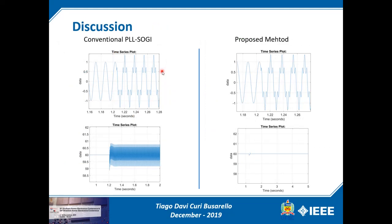A short comparison between the proposed method and the conventional PLL based on a second-order generalized integrator. When the input signal is clean and sinusoidal at 60 Hz, both methods perform well. However, when the input signal has harmonic distortion, the PLL shows an oscillatory behavior around 60 Hz with relatively high values. On the proposed method, the frequency is estimated accurately even in the presence of harmonic distortion, showing that this method is attractive and effective.